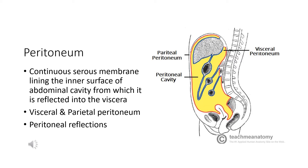Before we go to the derivatives of each part of the primitive gut, we will see something about the peritoneum and the peritoneal folds related to the abdominal organs. The peritoneum is a large thin serous membrane that lines the interior of the abdominal pelvic cavity. It is made up of a tough layer of elastic tissue lined with simple squamous epithelium and forms the largest serous sac of the body.